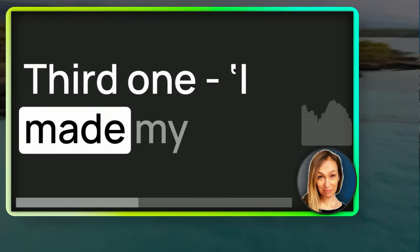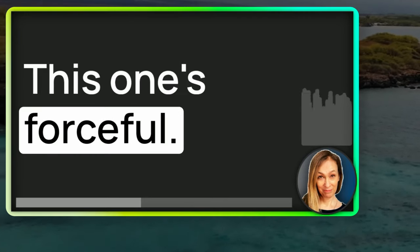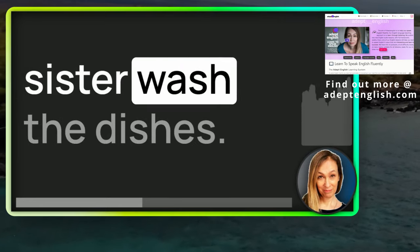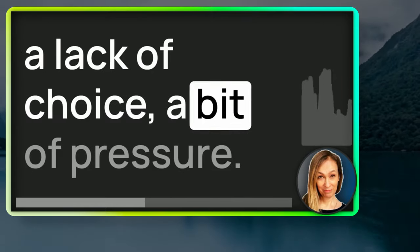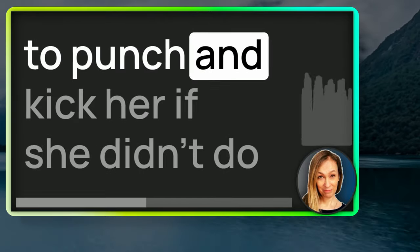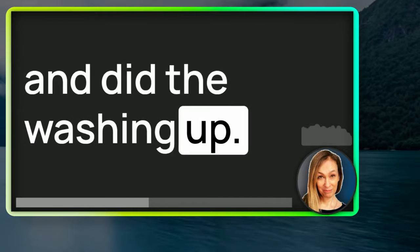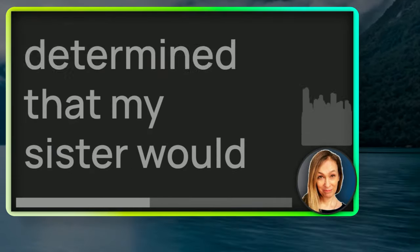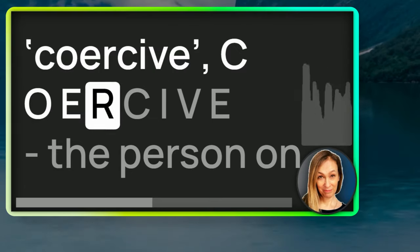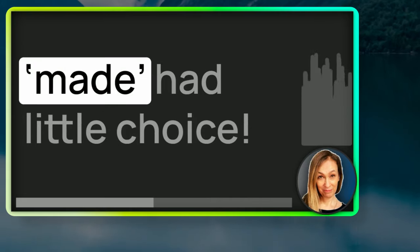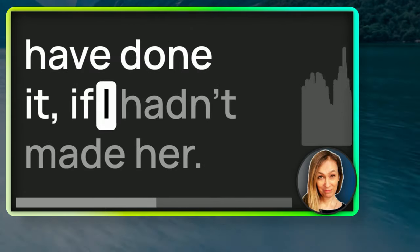Third one: my sister made me do the washing up. We're moving on to a stronger meaning — to make someone do something. This one's forceful, like I had to insist my sister wash the dishes. She didn't want to, but I made it clear it was her turn. To make indicates a lack of choice, a bit of pressure. More likely, I went in with some heavy persuasion and my sister relented. It was slightly what we call coercive. The person on the receiving end had little choice, and it implies there was resistance — my sister wouldn't have done it if I hadn't made her.